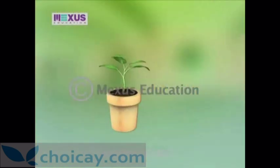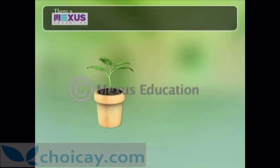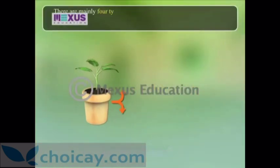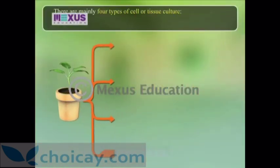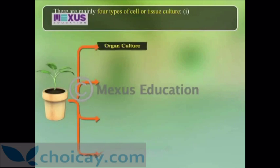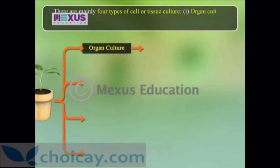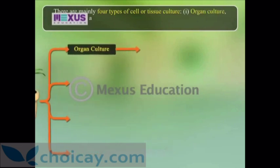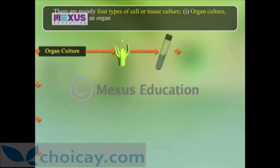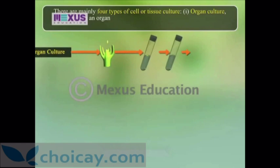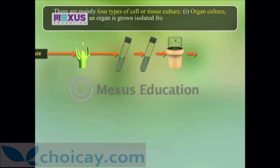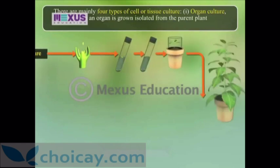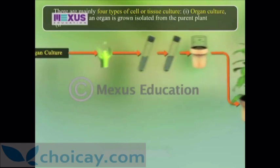There are mainly four types of cell or tissue culture. 1. Organ culture, where an organ such as a flower bud or immature fruit is grown in isolation from the parent plant. 2. Embryo culture, where an isolated or immature embryo is grown.